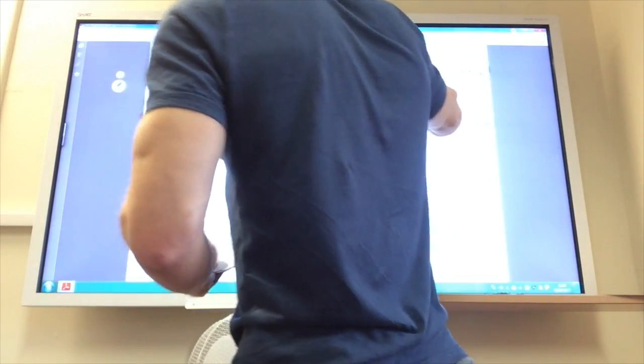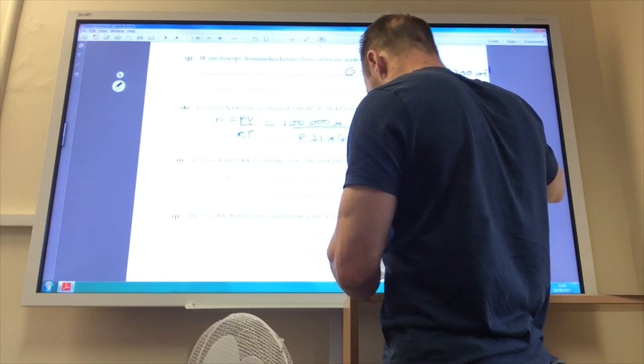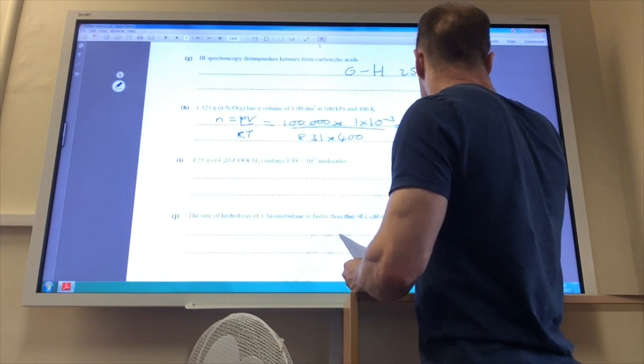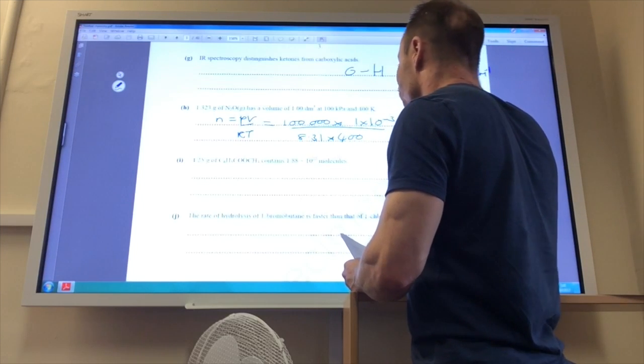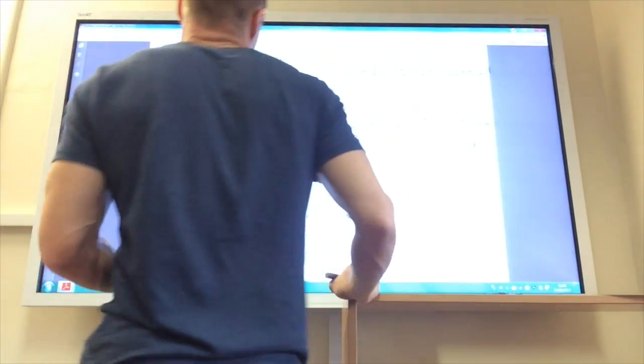And then you need to times that number by the molar mass of N2O, which is 44. So times by 44, and that gives you the answer of 1.323 grams.